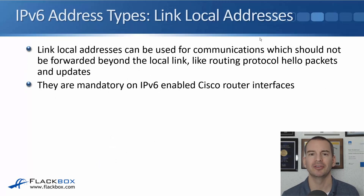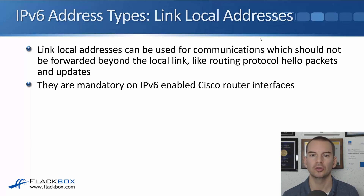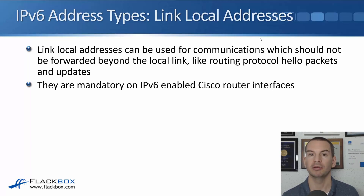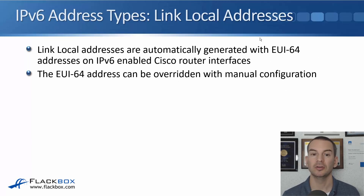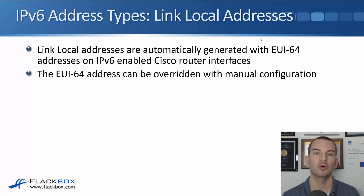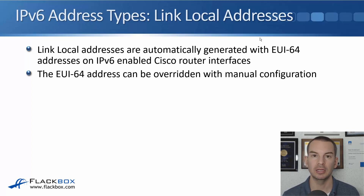You may be thinking: why would I ever use a Link Local address if you can only send traffic on the local link? They can be used for communications which should not be forwarded beyond the local link, like routing protocol hello packets and updates. Link Local addresses are mandatory on Cisco router interfaces if IPv6 is enabled. They are automatically generated with EUI64 addresses whenever you enable IPv6 on an interface, but that automatically generated EUI64 address can be overridden by manually configuring a Link Local address.